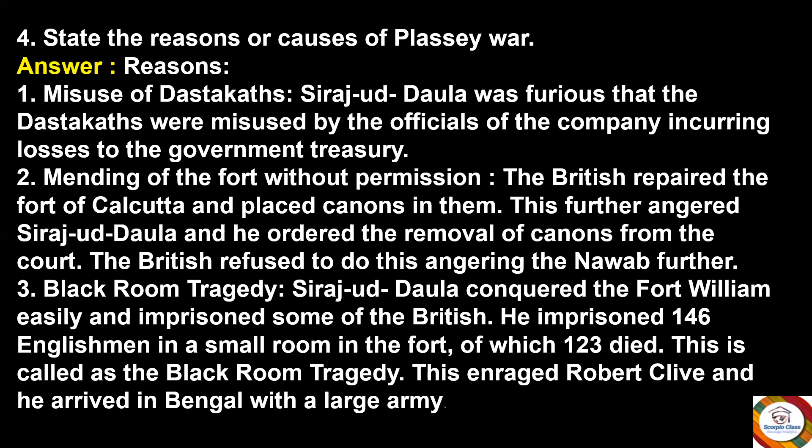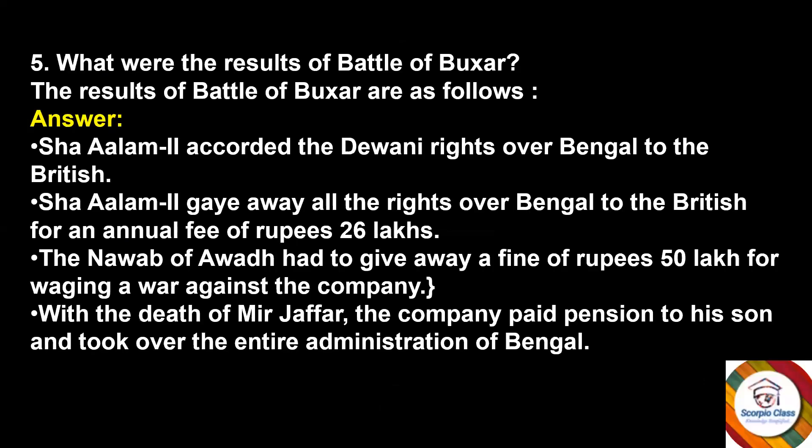Third, the Black Room Tragedy — Siraj-ud-Daula conquered Fort William easily and imprisoned some British soldiers. He imprisoned 146 Englishmen in a small room in the fort, of which 123 died. This incident is called the Black Room Tragedy. This enraged Robert Clive, and he arrived in Bengal with a large army. These are the causes of the Battle of Plassey.